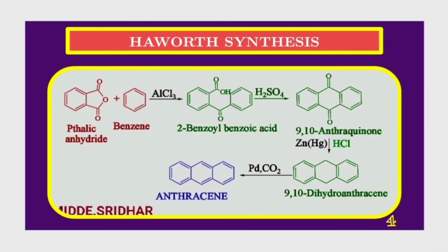Now we discuss about Haworth synthesis, which is carried out in four steps. In the first step, benzene is reacted with phthalic anhydride in the presence of aluminium chloride and 2-benzoylbenzoic acid is obtained as the product. This reaction comes under Friedel-Crafts acylation. In the second step, 2-benzoylbenzoic acid is dehydrated with concentrated sulfuric acid and 9,10-anthraquinone is obtained.